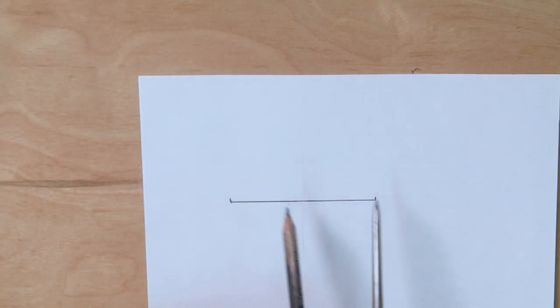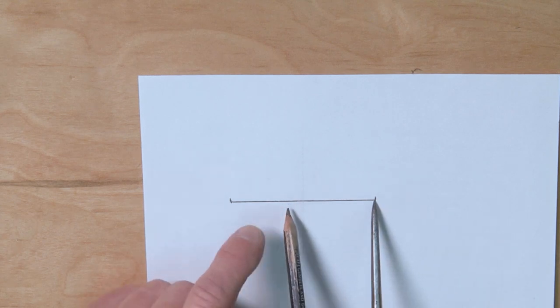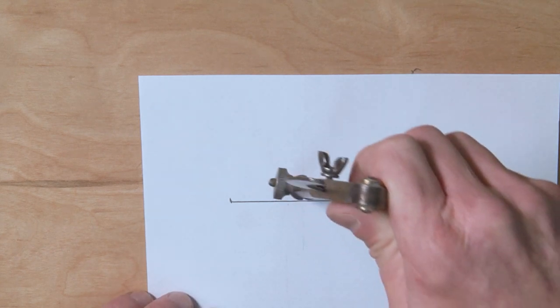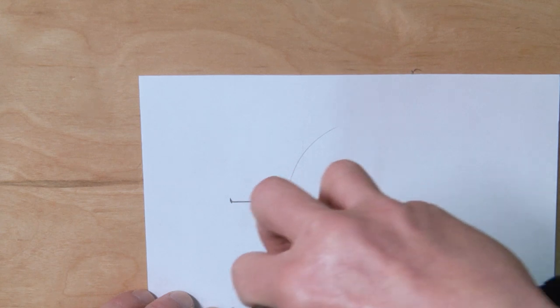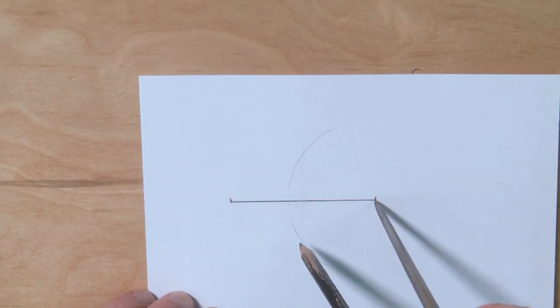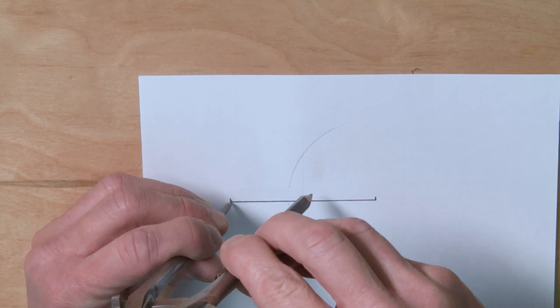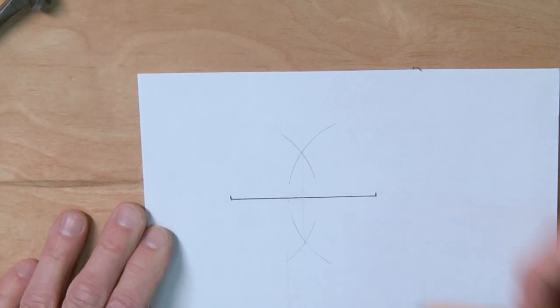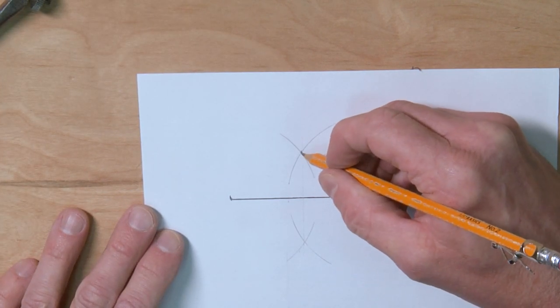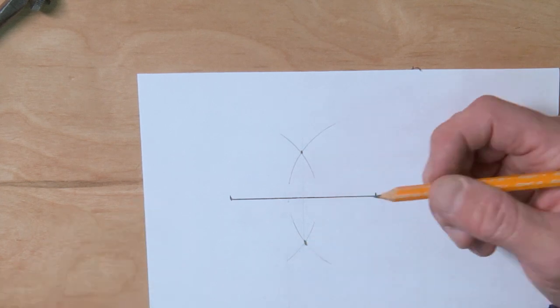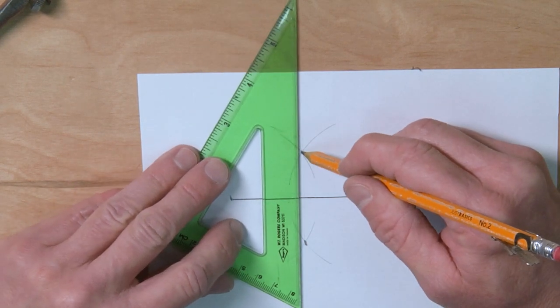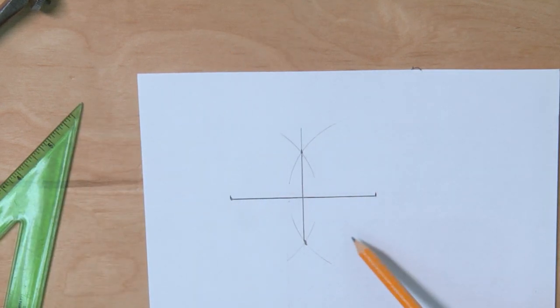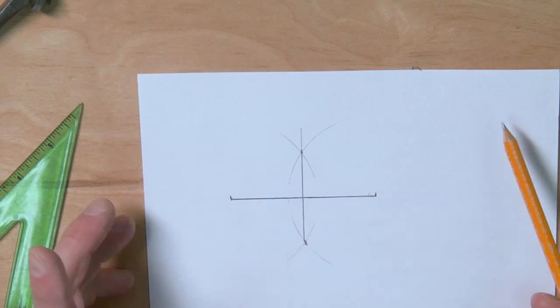In this case what I have is my compass and just eyeballing it I want the compass to be more than halfway and then what I'm gonna do is I'm gonna make an arc above it and below it. And now I'm gonna switch to the other side, do the same thing, and where the two arcs come together I can now connect those lines and I have my line perfectly divided in half.